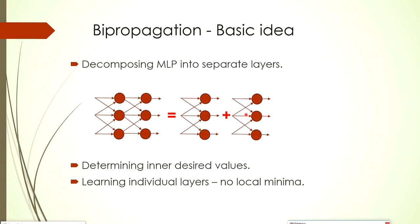Bi-propagation is the first of the two algorithms. The basic idea is that we decompose the MLP into separate layers. The problem is now we have to determine inner desired values — which was not the case with backpropagation — and so we can learn individual layers layer by layer. This eliminates the local minima problem for individual layers.